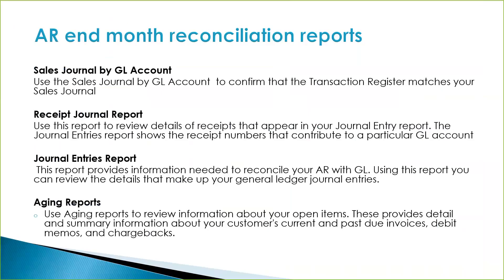There are several reports you may need to run. One is the Sales Journal by GL Account — you use this report to confirm that the transactions register matches your sales journals. Another is the Receipt Journal report, which you use to review details of any receipts that appear in your journal entry reports. There is also the Journal Entries report, which provides information needed to reconcile your AR with GL, and you can use it to review details that make up your GL journal entries.